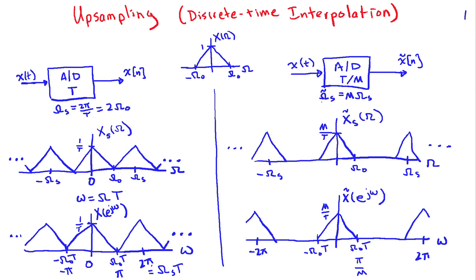Upsampling is the process of increasing the sampling rate. The signal has already been sampled, so it's in discrete time, and we're going to take those samples and do a discrete-time interpolation to construct a discrete-time signal that corresponds to a higher sampling rate.